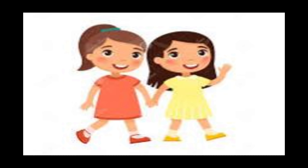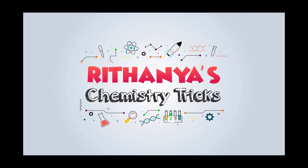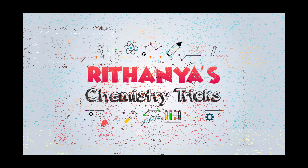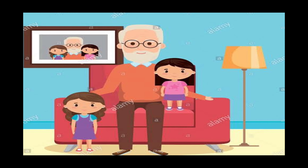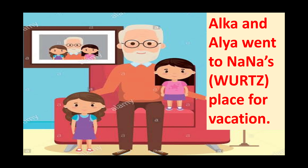Two girls are there — one name is Alka and the other girl's name is Alya. Both the girls, that is Alka and Alya, they went to their Nana's place for vacation, and their Nana is Woods. Woods is the girls' Nana.